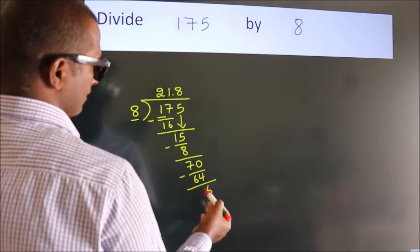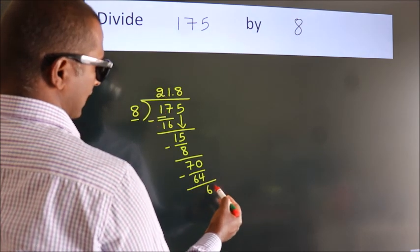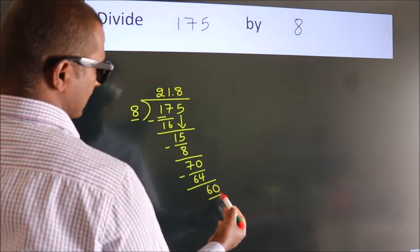After this, we already have the decimal, so directly take 0. So, 60.